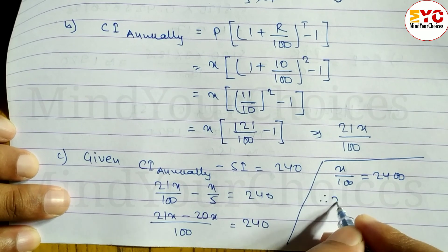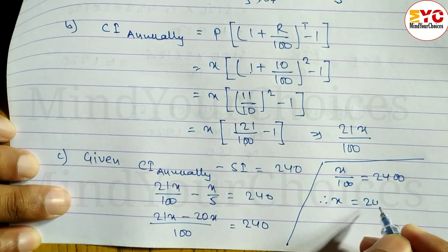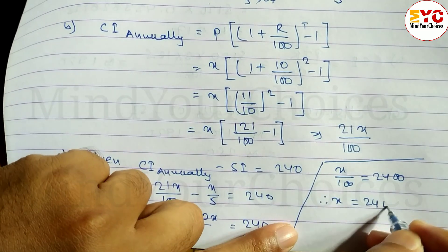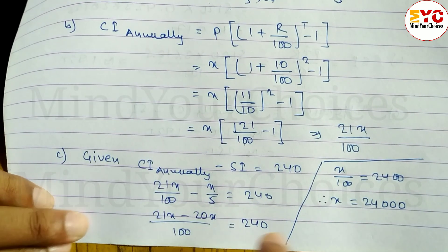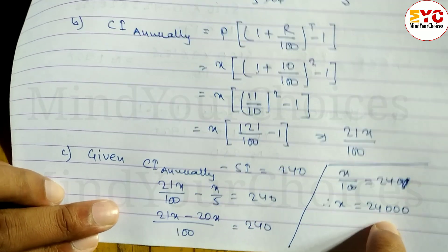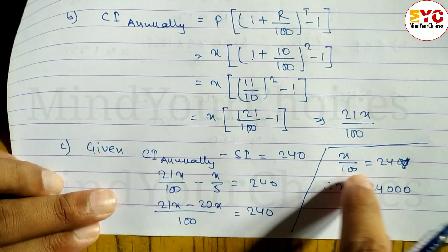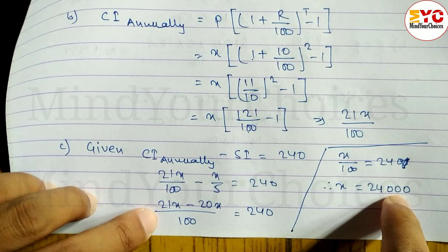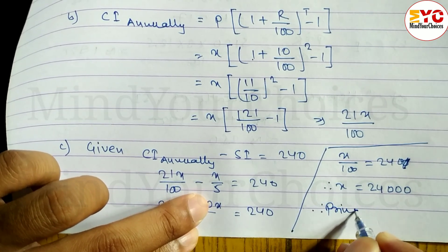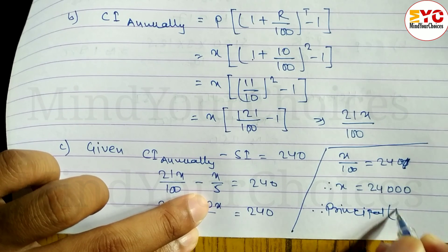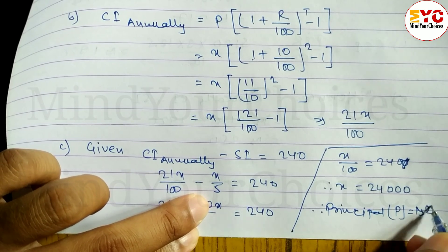Therefore x is equal to 24,000. 24 into 100 is 24 thousand. So principal is equal to, therefore principal P is equal to rupees 24 thousand.